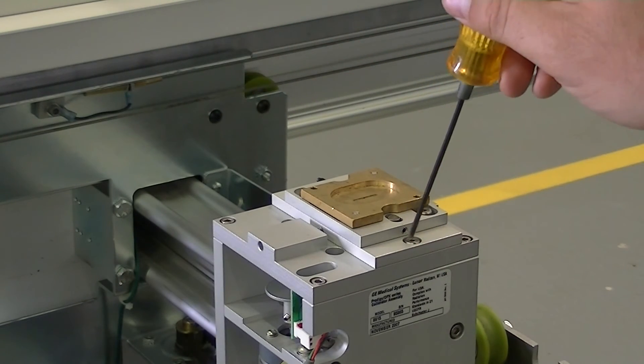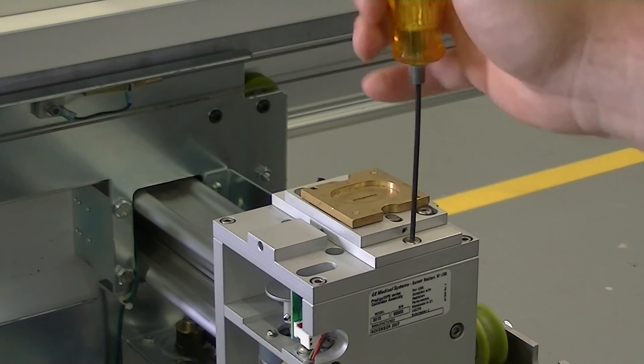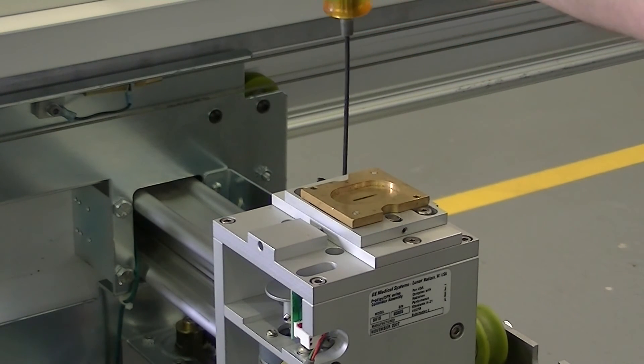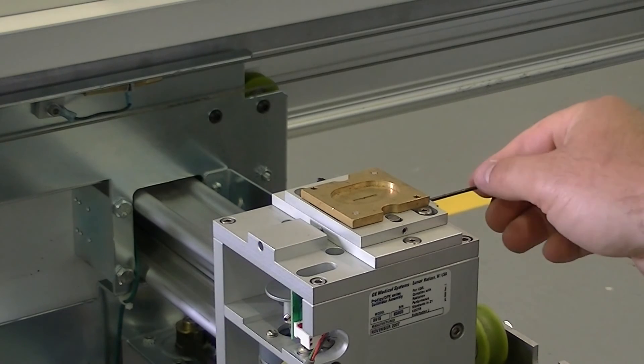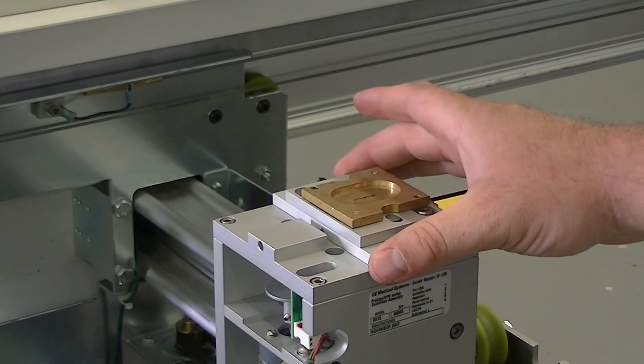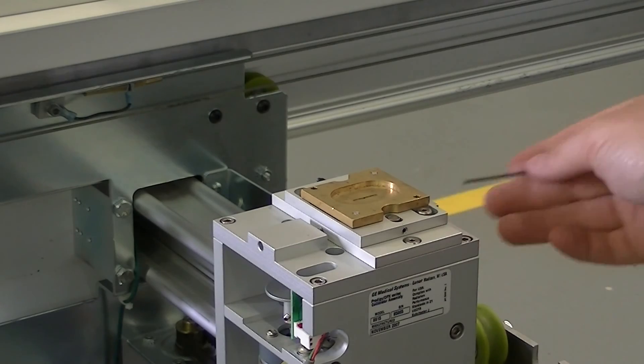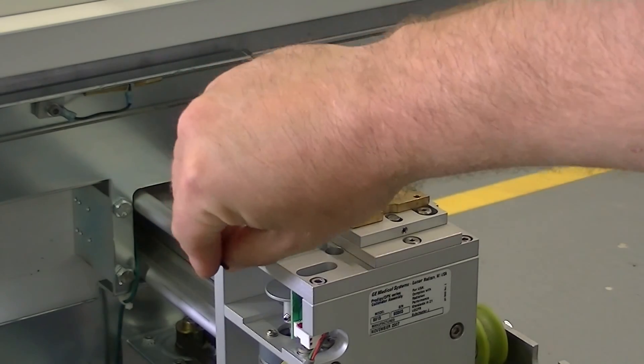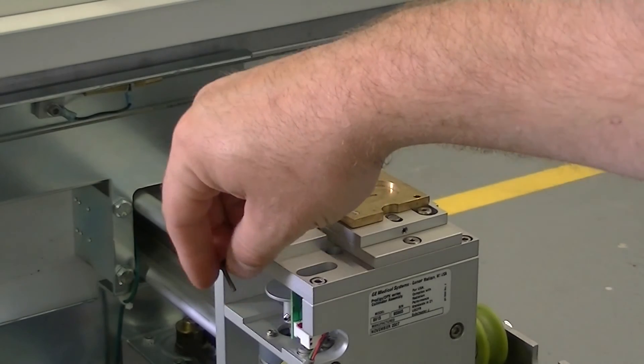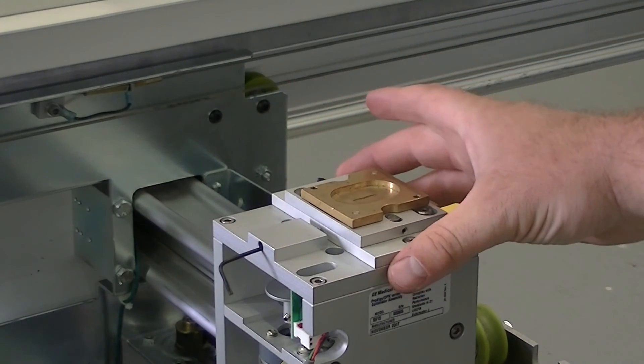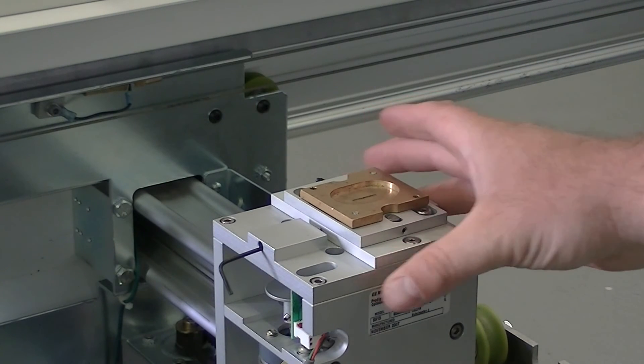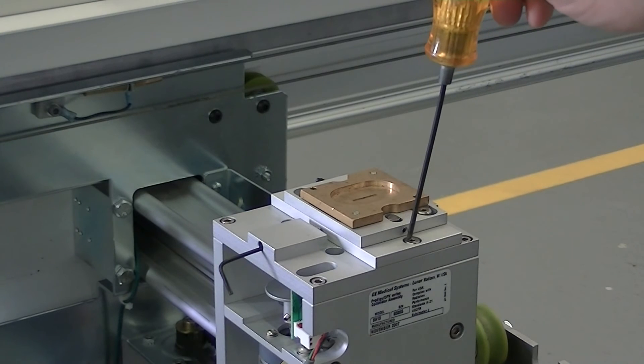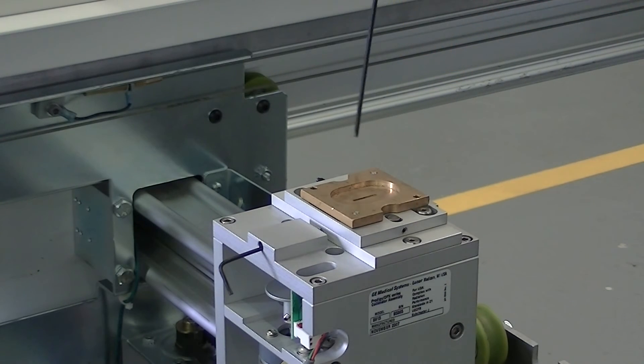The next slots that we need to adjust is the bottom one. We're going to loosen that. This will allow us to adjust from side to side, and secure this down as well.